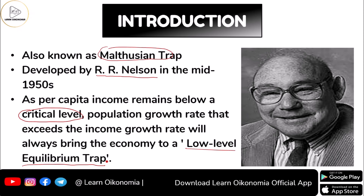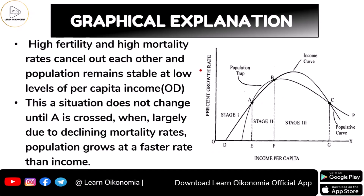Let's discuss the graphical explanation. You measure income per capita along the X-axis and per capita growth rate along the Y-axis. High fertility and high mortality cancel each other out, and population remains stable at a very low level of income, which we consider as OD. Whenever you are at the OD level of income, you are in Stage One. This situation will not change until you are able to cross the point indicated as A.